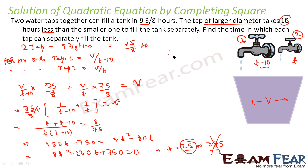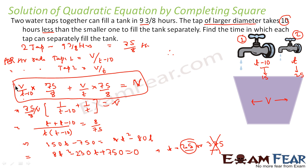So the smaller tap takes t = 25 hours, and the larger tap takes t minus 10 = 15 hours to fill the tank separately. To recap: we assumed tap 1 takes t hours and tap 2 takes t minus 10 hours, found each rate by assuming volume V, then used the combined-tap condition to set up and solve the equation.